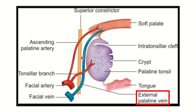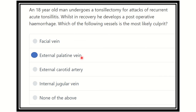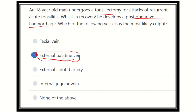So the artery is usually occluded, but the vein may slip out and cause hemorrhage. Therefore our answer is the external palatine vein, which drains from the facial vein. The external palatine vein may cause hemorrhage during the postoperative recovery following tonsillectomy. Thank you all.